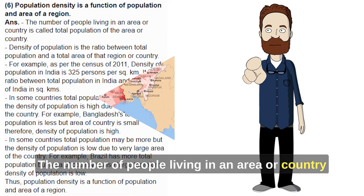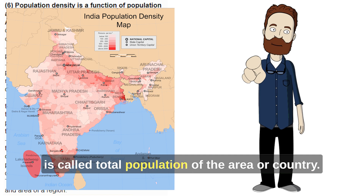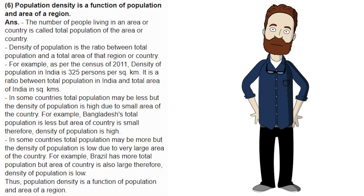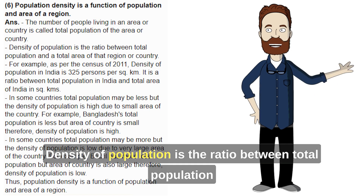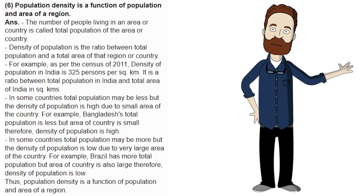Answer: The number of people living in an area or country is called the total population of the area or country. Density of population is the ratio between total population and the total area of that region or country.